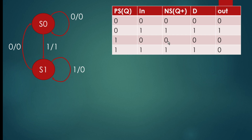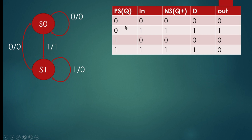Since we have only two states, this can be implemented using one flip-flop. Let the output of that flip-flop be Q (present state). When present state is Q=0 (S0) and input is 0, next state Q+ is 0. When Q=0 and input is 1, next state is 1. When Q=1 (S1) and input is 0, next state is 0. When Q=1 and input is 1, next state is 1.